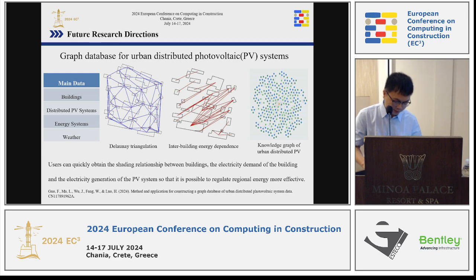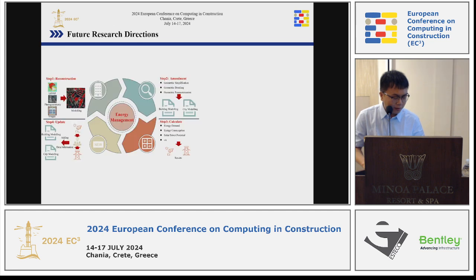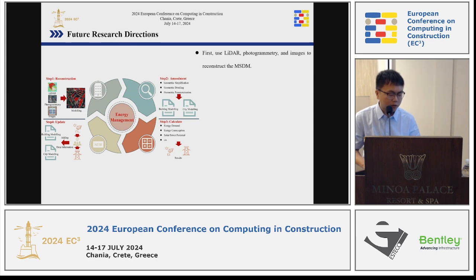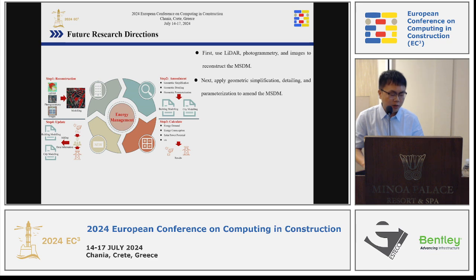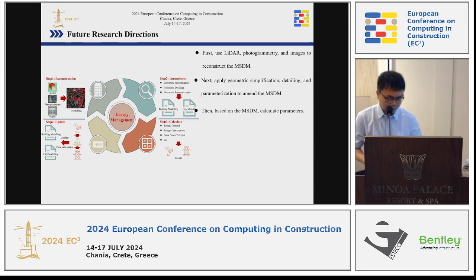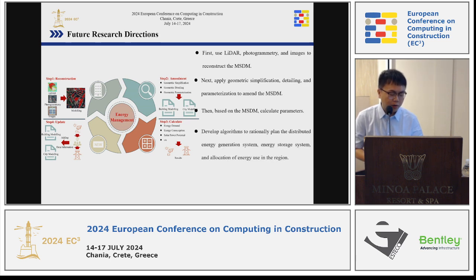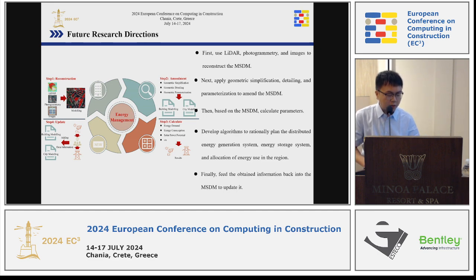We believe the full process for urban energy management works as follows: first, use LiDAR, photogrammetry, and images to reconstruct the multiscale digital model; second, apply geometric simplification, detailing, and parameterization to refine the model; then, based on the model, calculate parameters such as energy demand, energy consumption, and solar power production. From there, you can develop algorithms to rationally plan the distributed energy generation system, energy storage system, and optimize energy use in the region. Finally, feedback information is incorporated back into the model to update it.